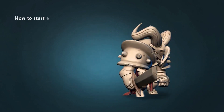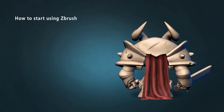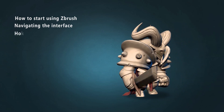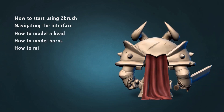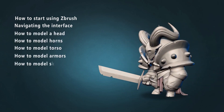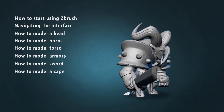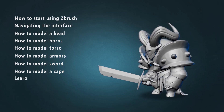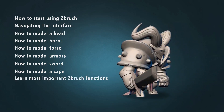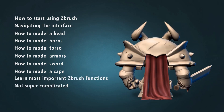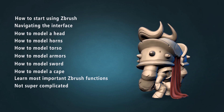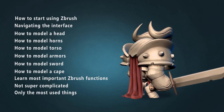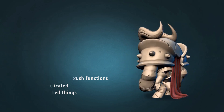I will slowly and fully explain how to start using ZBrush, how to navigate the interface, the various things you need to know to model a head, horns, torso, armors, sword and even a cape all in ZBrush. While we are working on our character we will learn how to work with the most important ZBrush functions. I will not make this super complicated by going through everything in ZBrush — I will show you only the things you really need to know to make a fully finished high-poly character.